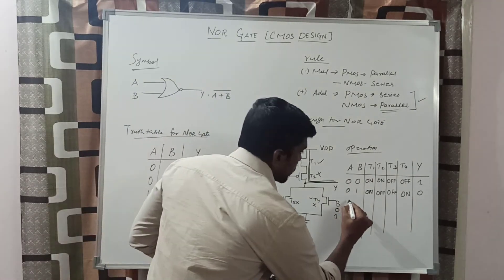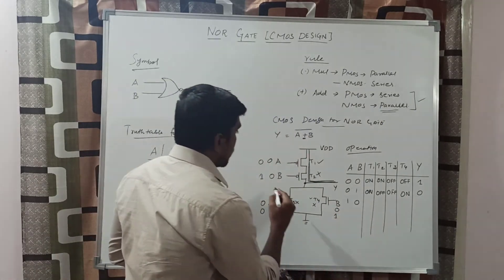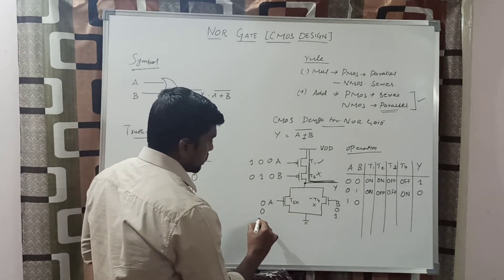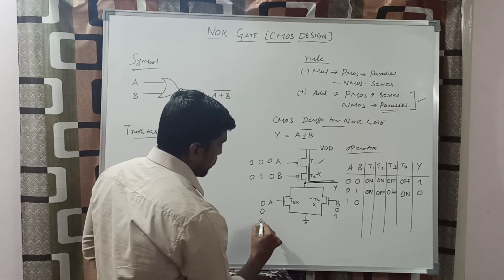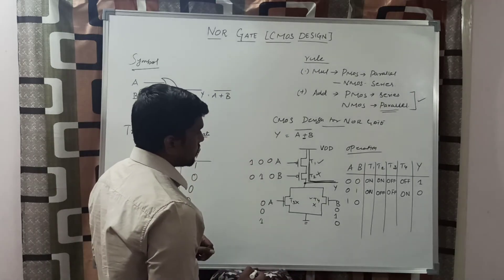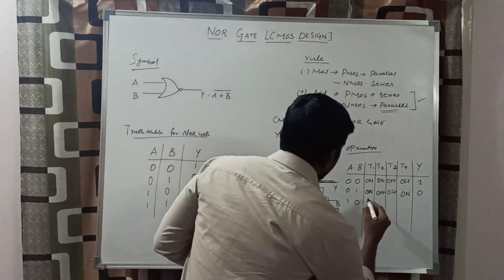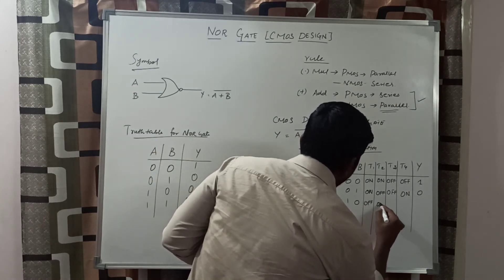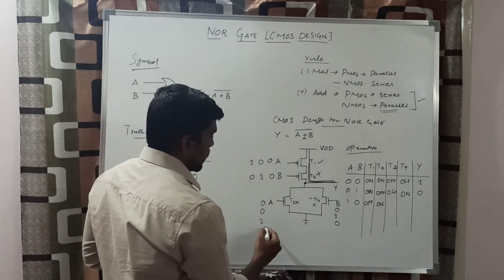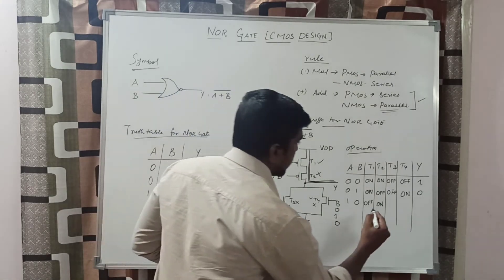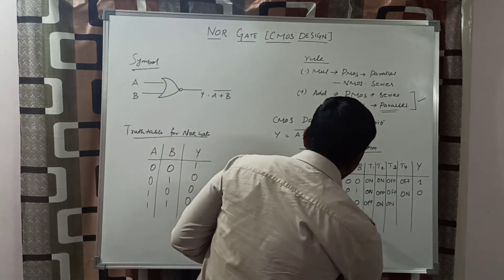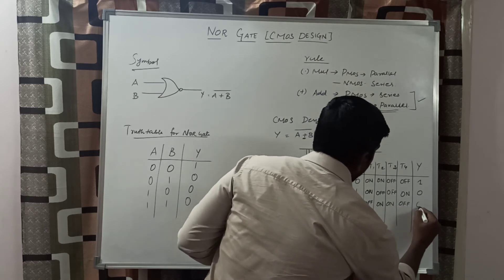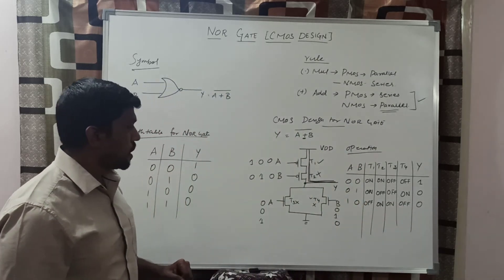The third condition: A equal to 1, B equal to 0. In the pull-down network, A value 1, B value 0. In this condition, T1 transistor is off, T2 is on. T3 — with A value equal to 1 — T3 is on, and T4 transistor is off. In this case, the response of the output is 0.